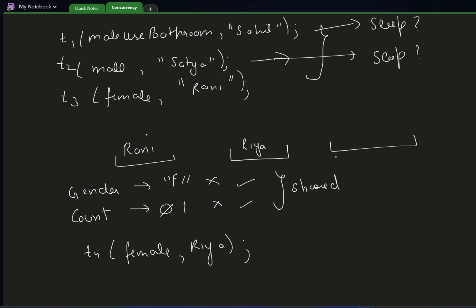It's simple: Ria will use the washroom, the counter will go to two; then Rani will use the washroom and finally leave, then counter will become zero. As soon as the counter becomes zero, we change the gender to neutral again — now anyone, male or female, can come to the washroom. So it's our responsibility that whenever the counter changes, we notify all the threads.